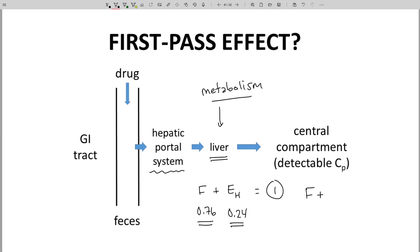F plus EH equals 1. The barrier that the liver poses to all drugs is called the first-pass effect, and is quantified by the liver extraction ratio for a specific drug.